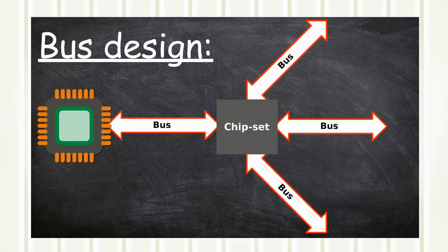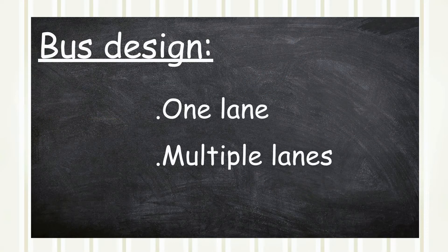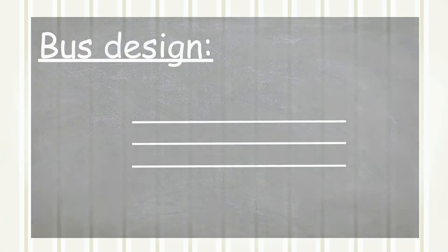There are two main designs of a computer bus. It can consist of one or multiple lanes. Each lane is a single wire connection and how data will be transmitted will vary according to the number of lanes.